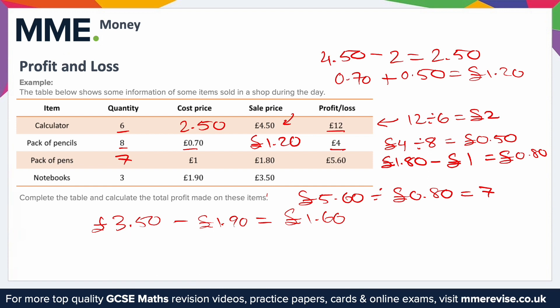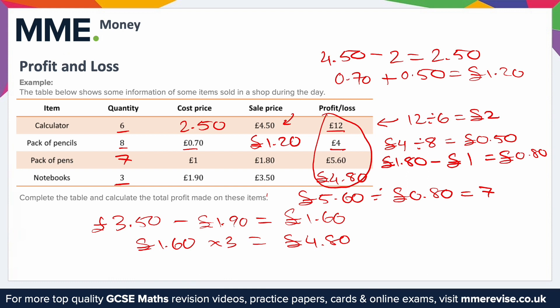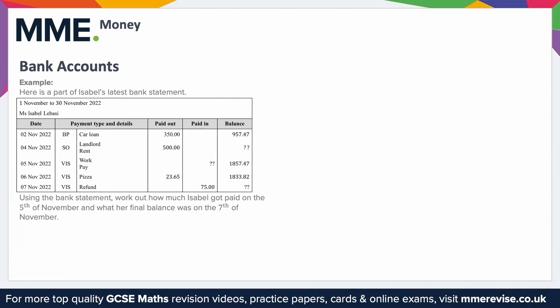We multiply the profit per unit by the number sold: £1.60 × 3 = £4.80. To find the total profit we add the profit column: £12 + £4 + £5.60 + £4.80 = £26.40. The two most common types of bank accounts are current accounts and savings accounts. A current account is ordinarily used on a daily basis to pay for bills and make purchases, and ingoing and outgoing money appears on a monthly statement.